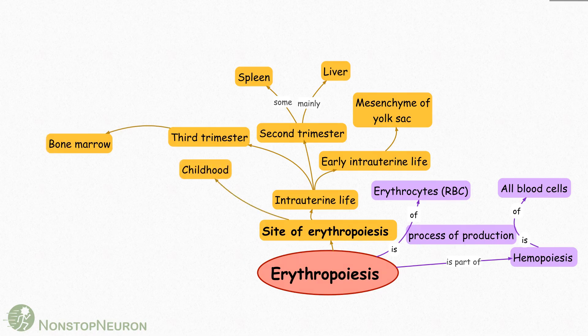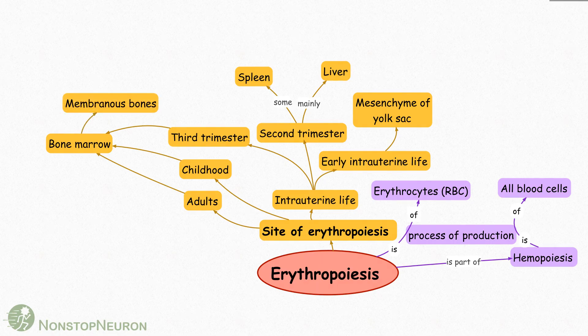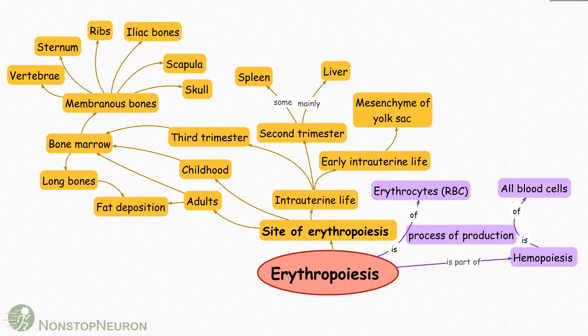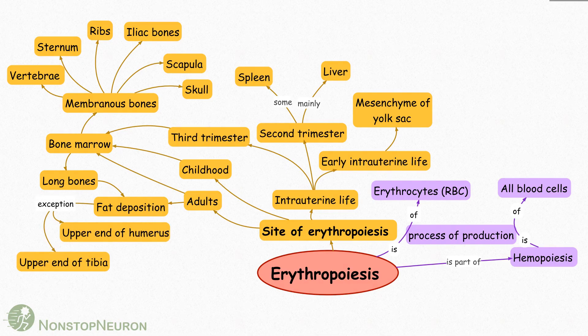After birth, in childhood and later in life, RBCs are exclusively produced from bone marrow. In childhood, they are produced from all bones — for example, membranous bones like vertebra, sternum, ribs, iliac bones, scapula, and skull, as well as all the long bones. However, in adults, marrow in long bones undergoes fat deposition and loses the capacity to produce RBCs. Exceptions are the upper end of the humerus and upper end of the tibia, which continue to produce RBCs in adults too.